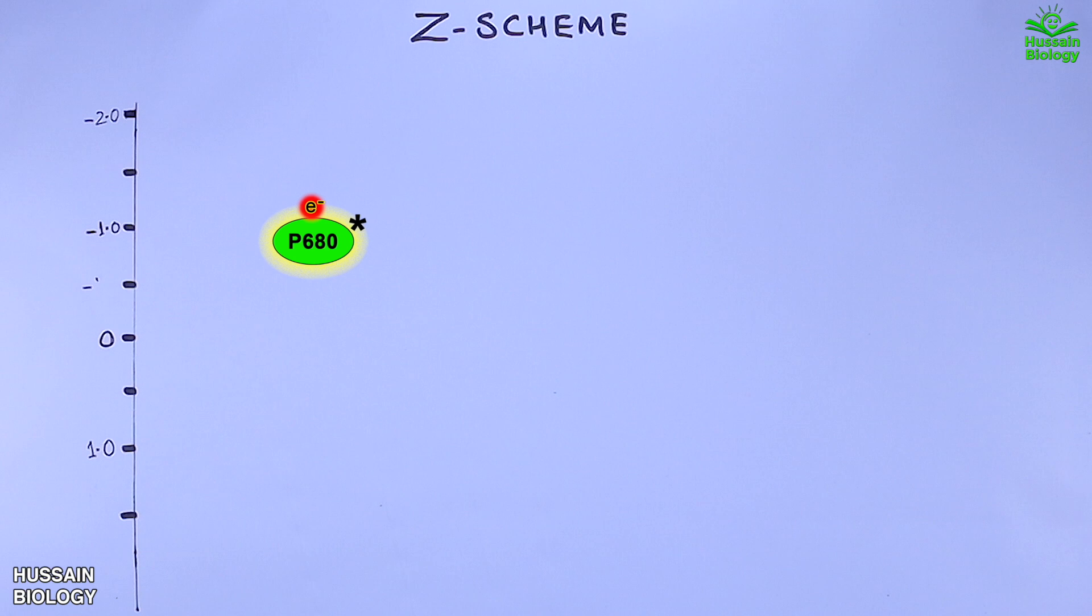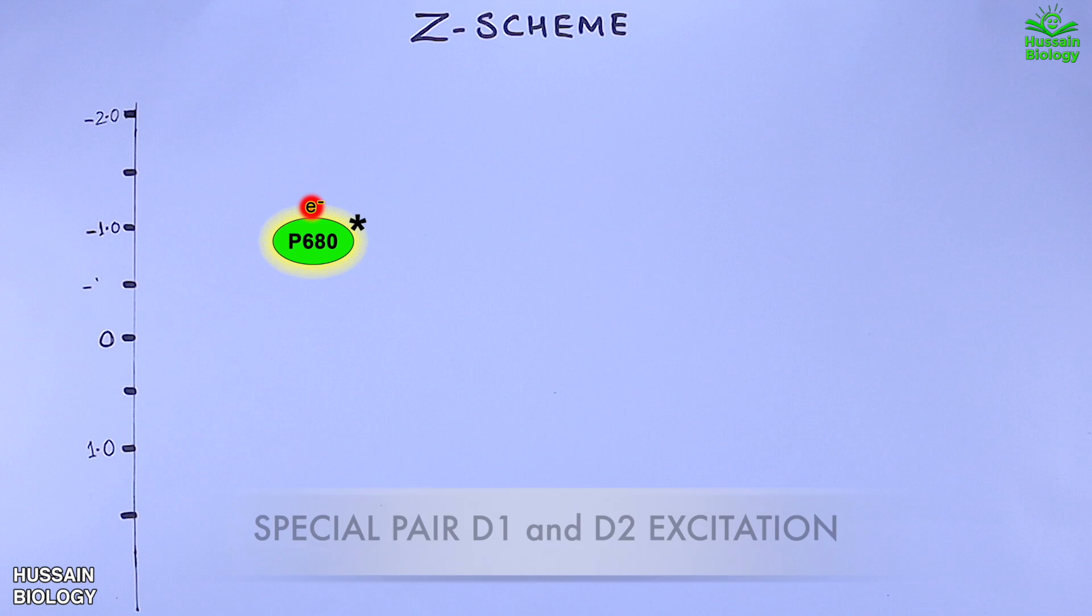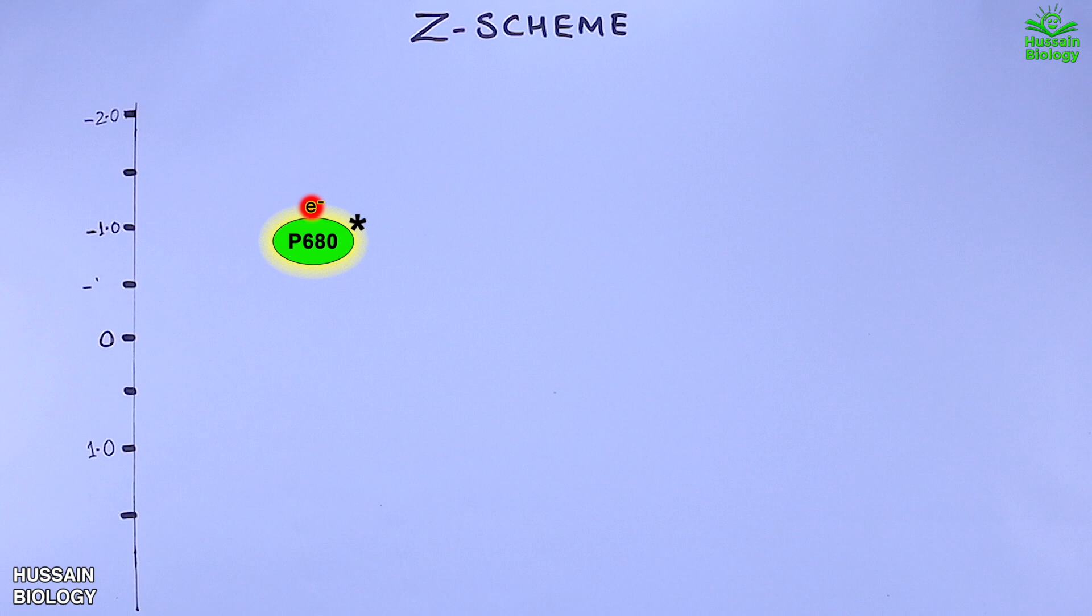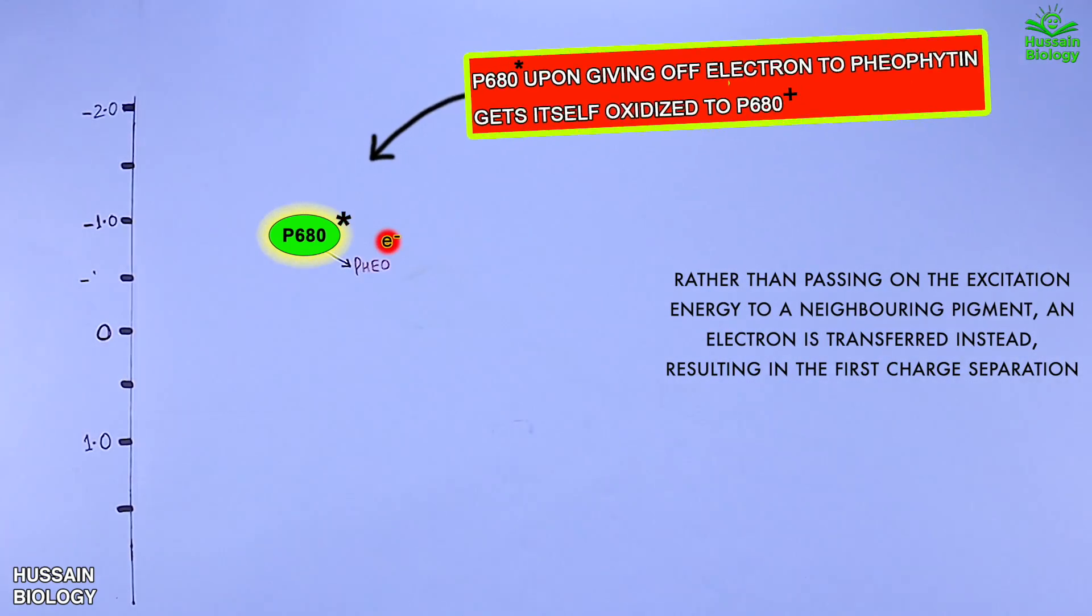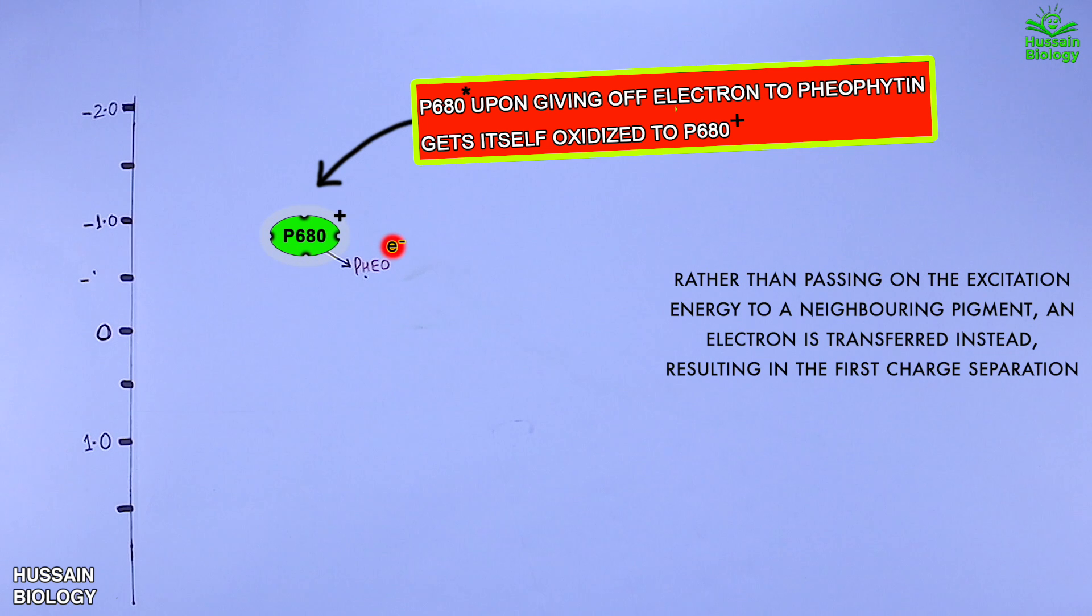Now we have energized and excited electrons with P680, and these high energy electrons are then transported to a nearby pheophytin molecule. As we know, pheophytin is at higher reduction potential than the excited pair of P680, so excited P680 easily gives off electrons to the pheophytin molecule.